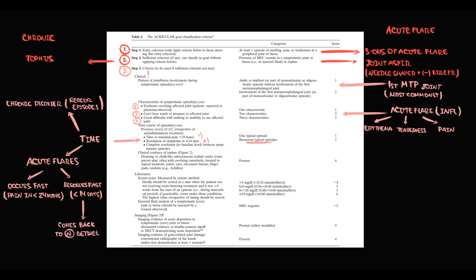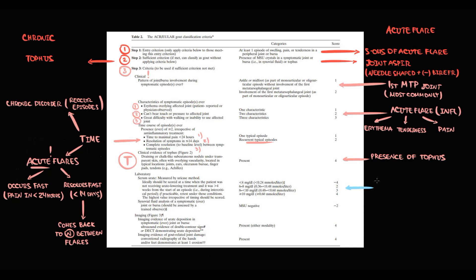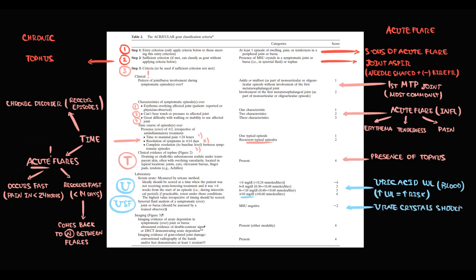Acute flare resolves fast — usually it takes less than two weeks for complete resolution of symptoms. Once the acute flare is gone, everything returns to normal until a new acute flare develops. The presence of a tophus is described as a draining or chalk-like subcutaneous nodule, and the most common sites where tophi can develop are also specified. Laboratory criteria include uric acid level — the higher it is, the greater the risk of gout. Uric acid crystals with needle shape and negative birefringence on joint aspiration are the hallmark.